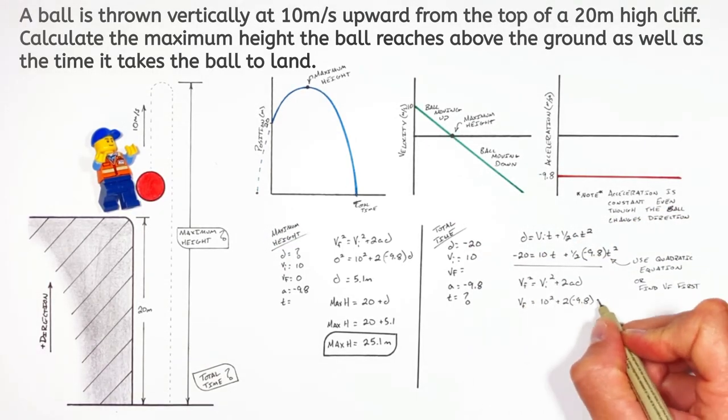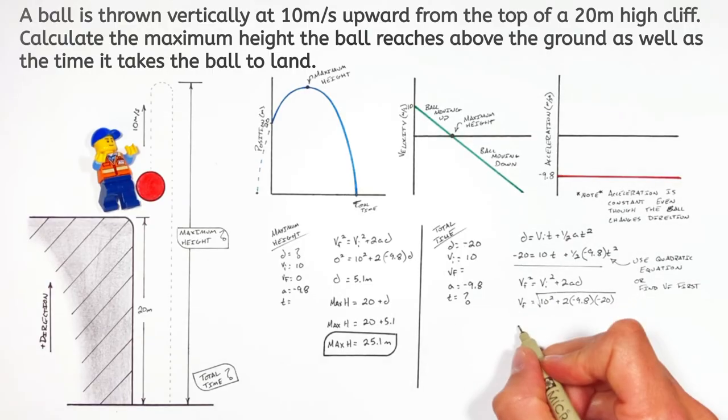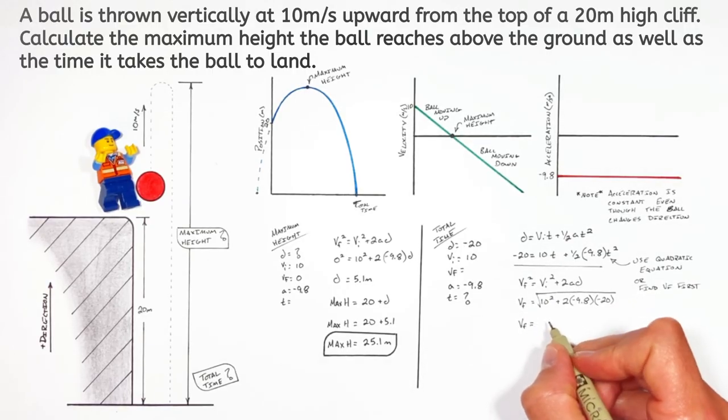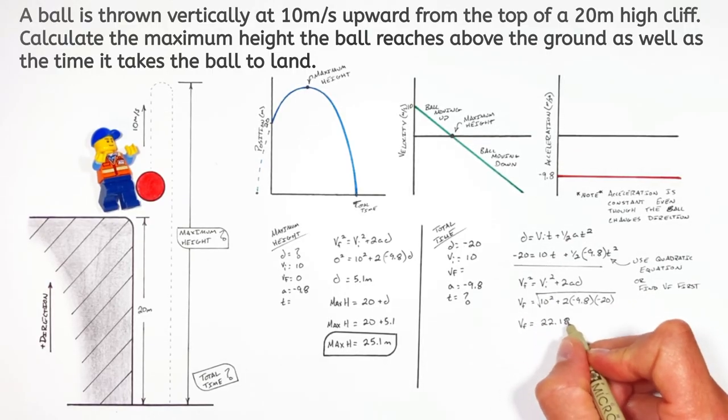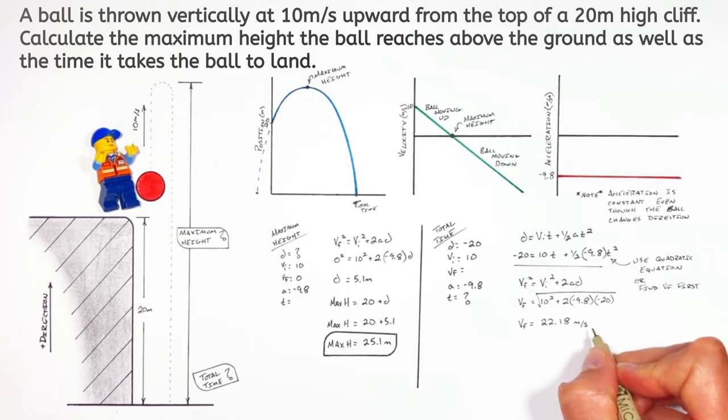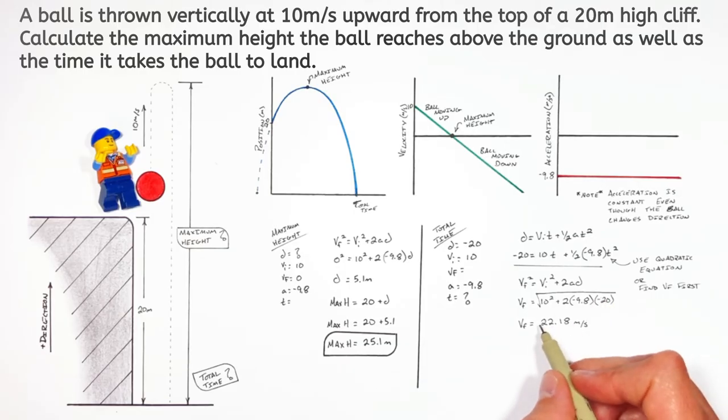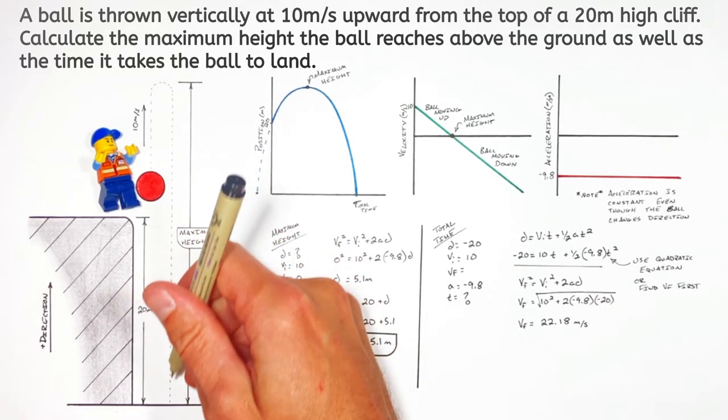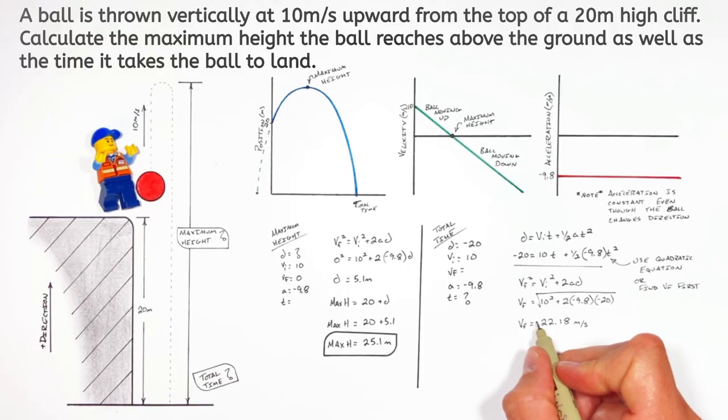So plugging in our values for the final velocity, we find VF is 22.18. Now you have to be careful with this method a little bit too. Because the final velocity is downward. And realize when we took the square root, we have to decide whether that result is positive or negative. And because the ball is going down, the result is negative.